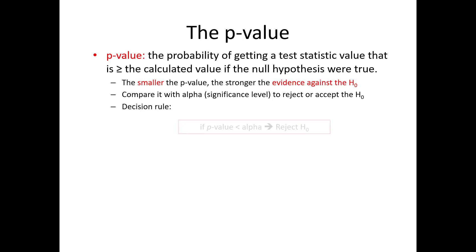We can use the decision rule, if the p-value is less than alpha, reject H0. And this rule is equivalent to the decision rule we saw earlier, that if the test statistic is greater than the critical value, we reject the H0.